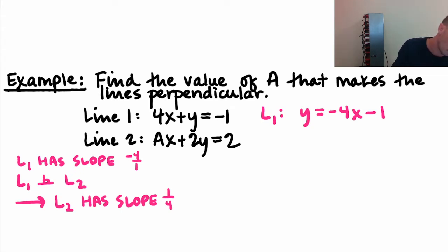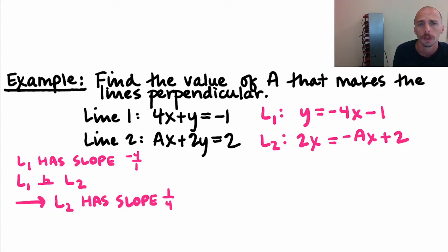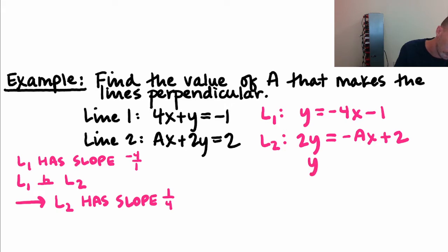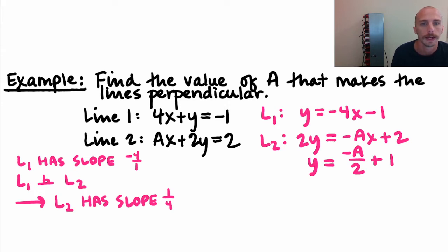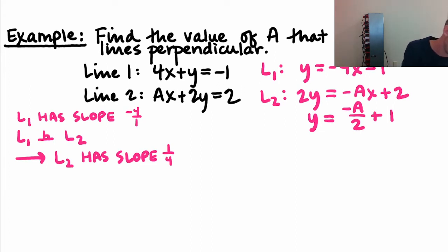Now I solve for y on line two. Subtracting ax from both sides, then dividing both sides by two, I get y = −(a/2)x + 1. Since negative-a times x is a single term, I only divide by two once. What I see is that if L2 needs slope one-fourth, and the slope of L2 is also −a/2, I'm going to set these two things equal to each other.